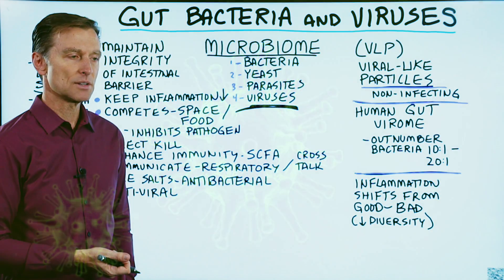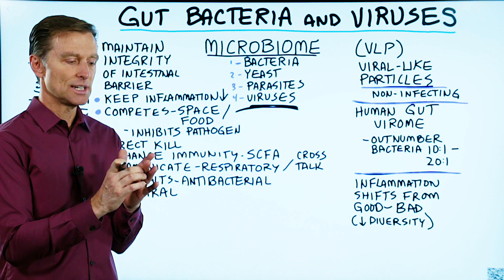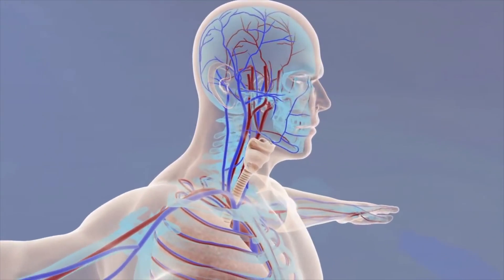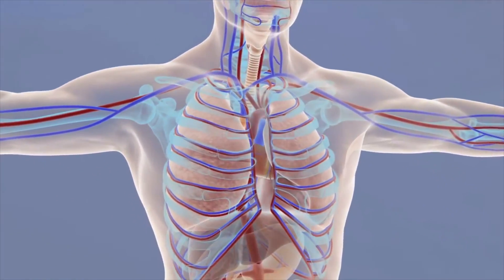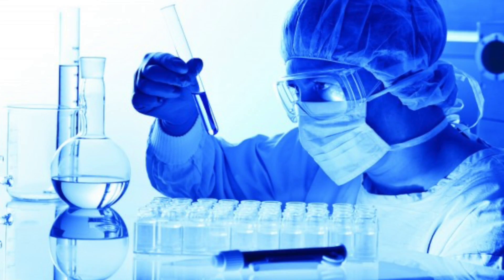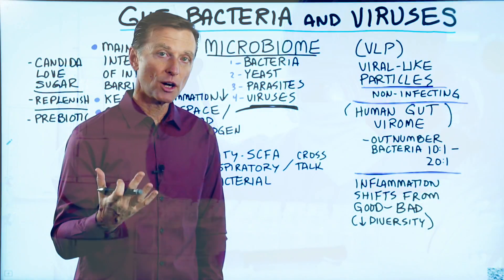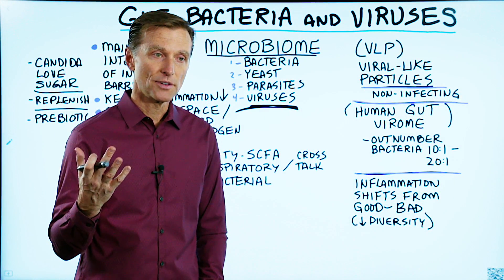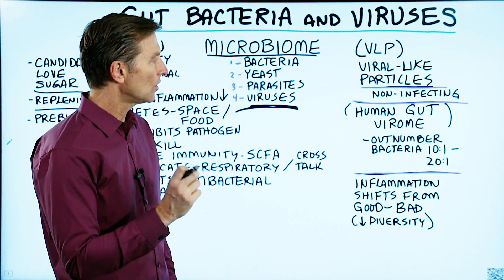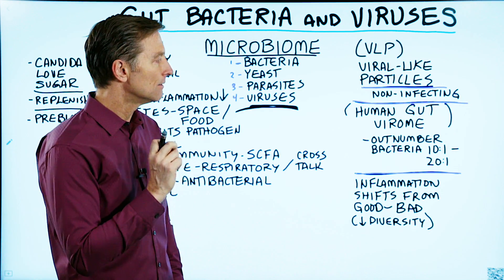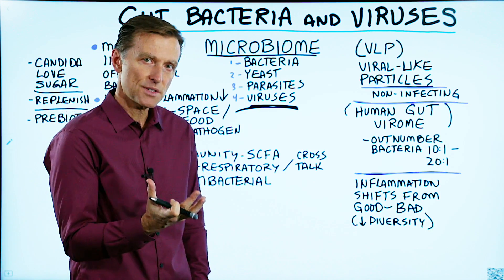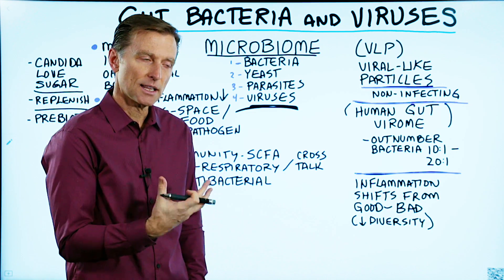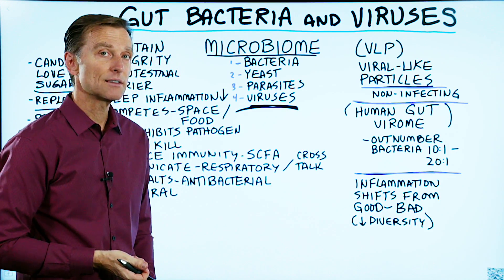The VLPs are not infected — they don't have any genetics inside the cell, but they're viral-like particles that exist throughout the body. There's not a lot of things known about them, but they're doing research on them. There's something called the human gut virome, which are clusters of viruses that live in your body, and there's a lot of them.